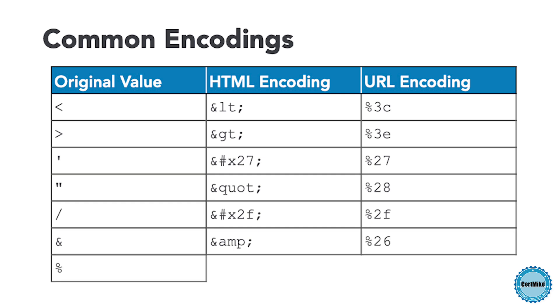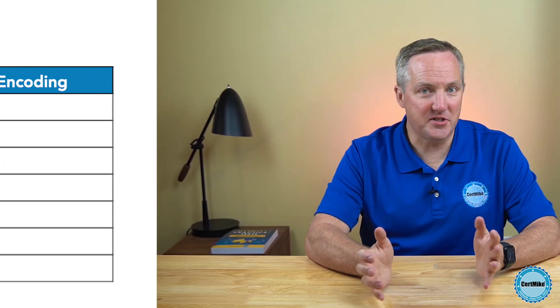Similarly, we encode the percent sign, which is HTML encoded as &#x25; and URL encoded as %25. Now, that's just a short list of some of the commonly encoded values. You shouldn't attempt to perform encoding manually because there are many other values that need to be protected as well. Instead, you should use a secure, trusted encoding library that automatically validates and encodes all potentially dangerous values.